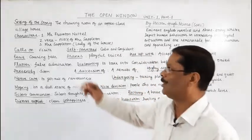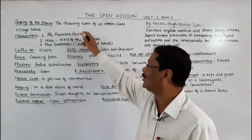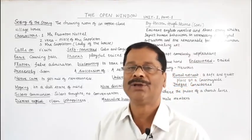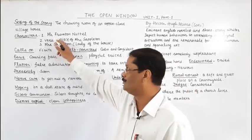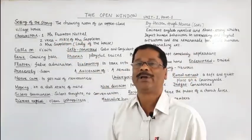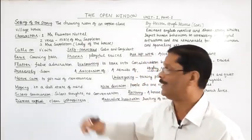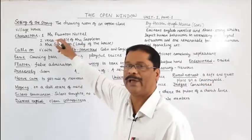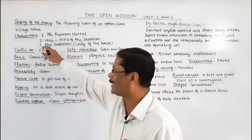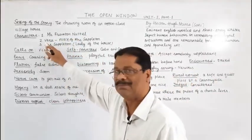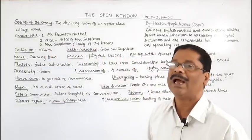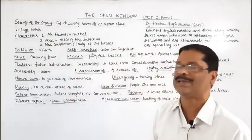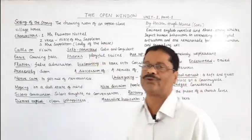This story is named 'The Open Window' because it is completely based on the open window. The setting of this story is the drawing room of an upper class village house — the house of Mrs. Sappleton. The main characters are Mr. Framton Nuttel, Vera — who is the 15-year-old niece of Mrs. Sappleton — and Mrs. Sappleton herself, the lady of the house.